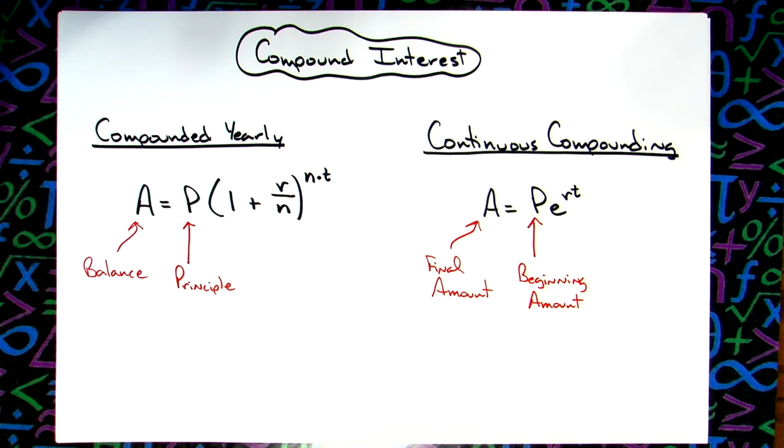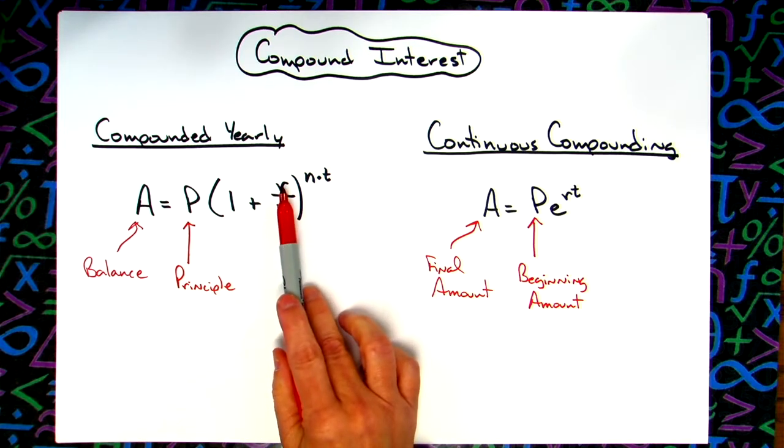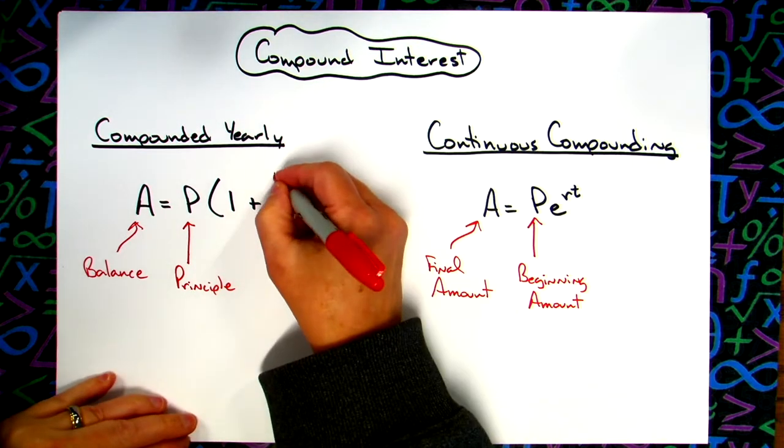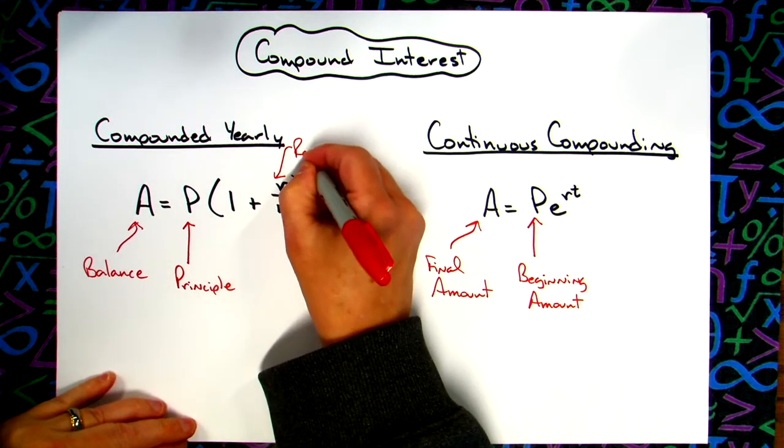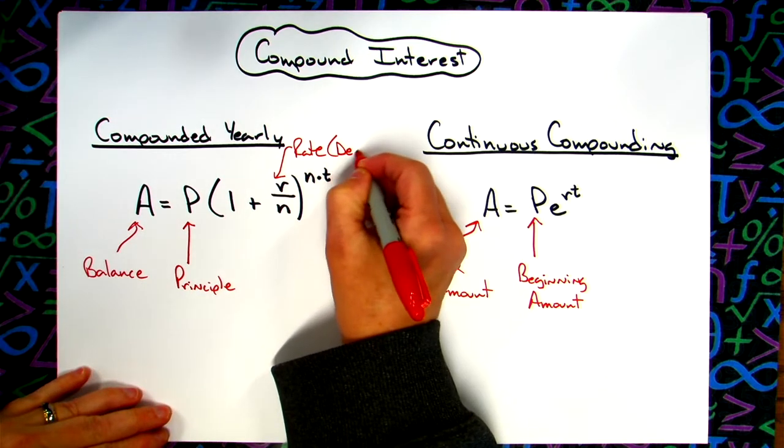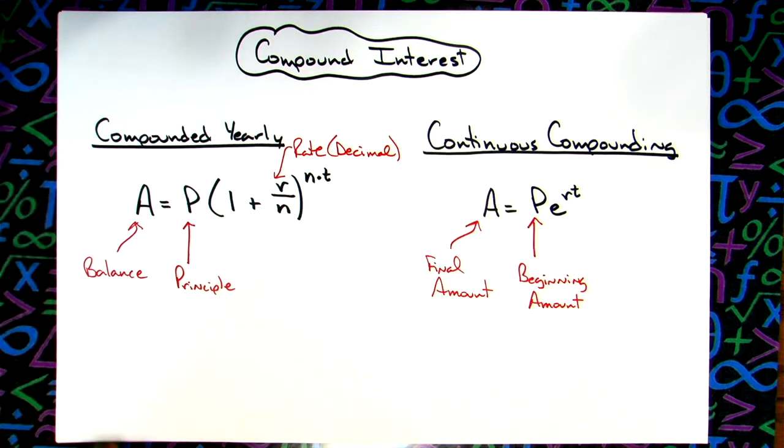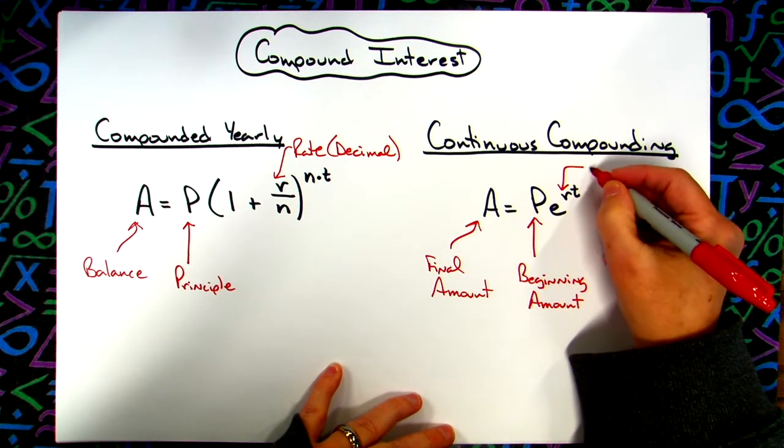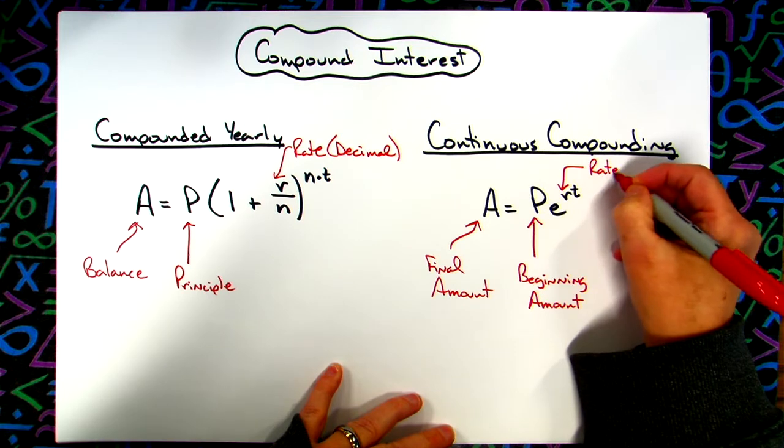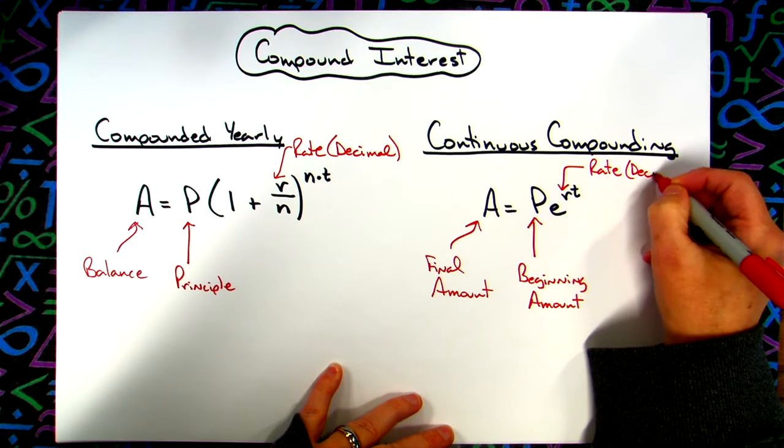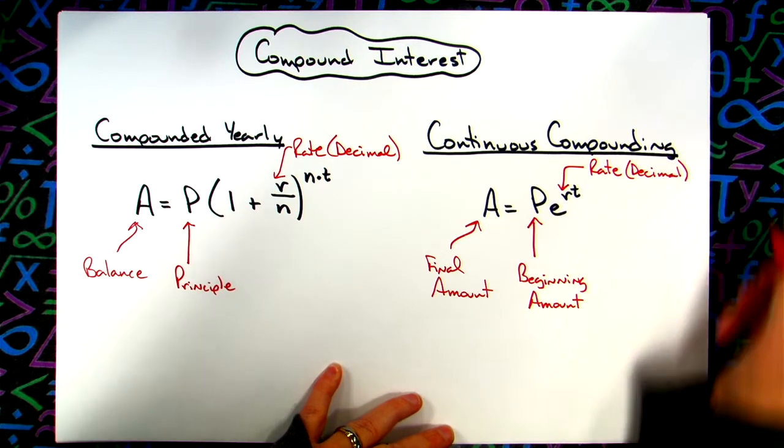In this formula you're always going to have a one. You've got an R in both of them. The R stands for the rate and we're always going to enter the rate as a decimal. So they're probably going to tell you that the rate is three percent or six percent, and you're not going to put in six, you're going to put 0.06.